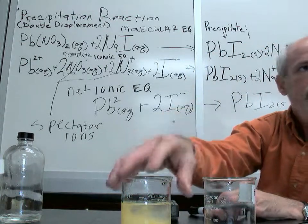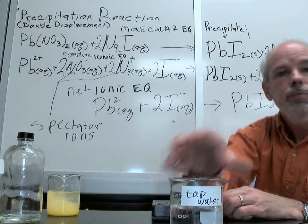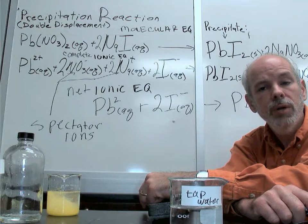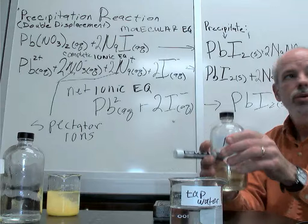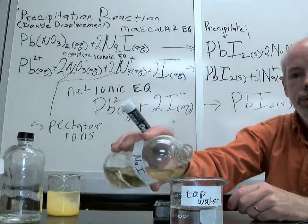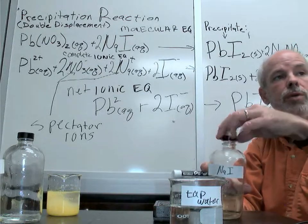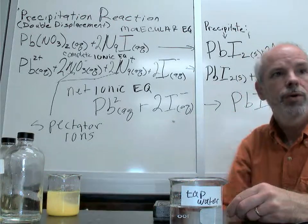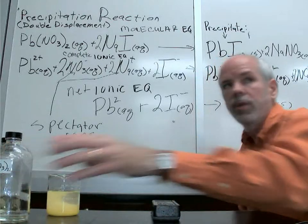Now, if I come back to my aqueous solution, this is actually a pretty famous reaction, because lead is a terrible toxin. If you have lead in your drinking water, you are concerned that you might be poisoned. So what you do is take a little bit of sodium iodide, take your tap water, and pour it in. And happily, no yellow precipitate forms, so I know it's safe to drink my tap water — although I don't think I'll drink the sodium iodide.